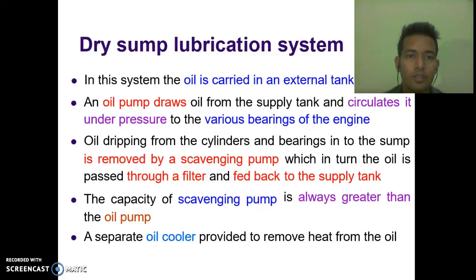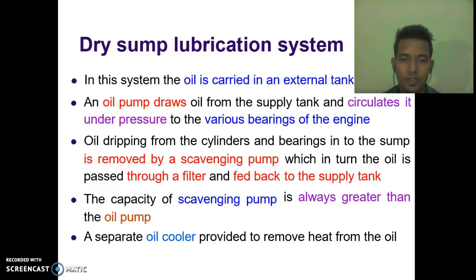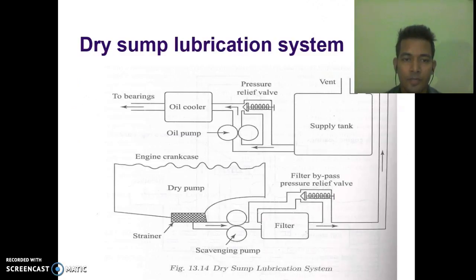Now we discuss the dry sump lubricating system. In this system, the oil is carried in an external tank. An oil pump draws oil from the supply tank and circulates it under pressure to the various bearings of the engine. Oil dripping from the cylinders and bearings into the sump is removed via a scavenging pump, which then passes the oil through a filter and feeds it back to the supply tank. The capacity of the scavenging pump is always greater than the oil pump. A separate oil cooler is provided to remove heat from the oil. Here you can see the diagram of the dry sump lubricating system.